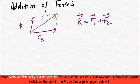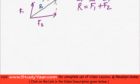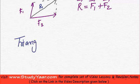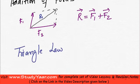So this is going to be my R. And what is resultant? Resultant is simply just the addition of all the forces. We also have a law which is called as the triangle law which is just a special case of parallelogram law.